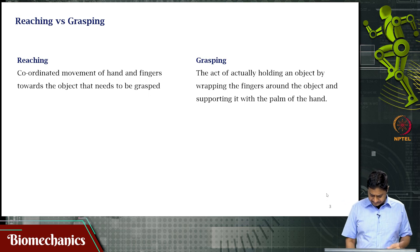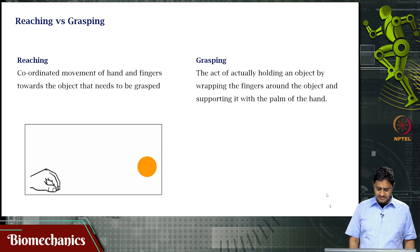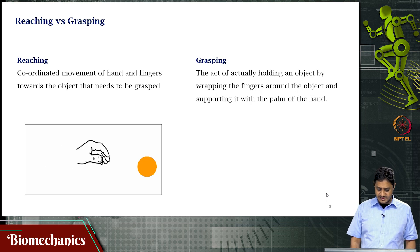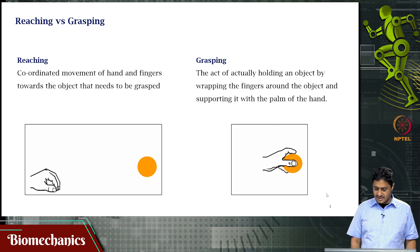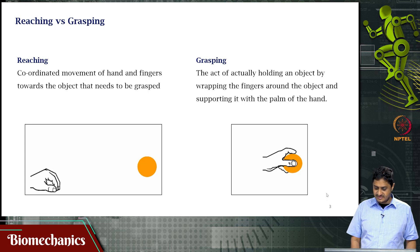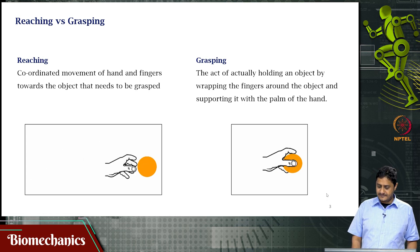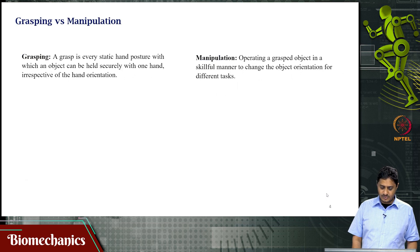To illustrate: the hand reaching toward a ball is reaching, and the ball being held by the fingers is grasping. That is grasping — just for clarity, repeating it one more time.